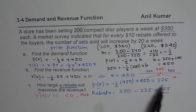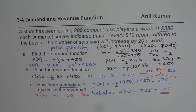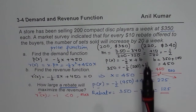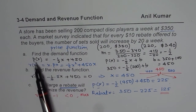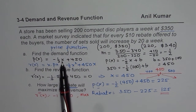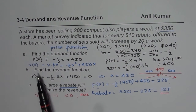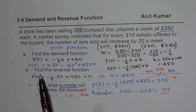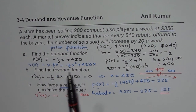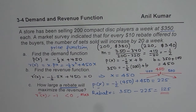In summary: whenever you have a linear relationship, use y = mx + b to find the slope and then the demand function, where price is the dependent variable and number of items is independent. Revenue equals price times number of items sold. To maximize or minimize revenue, find the derivative, equate it to zero, and verify whether the critical point is a maximum. I hope that helps. Thank you and all the best.